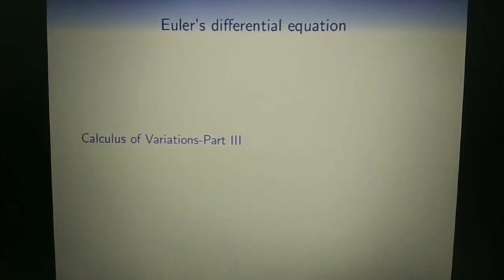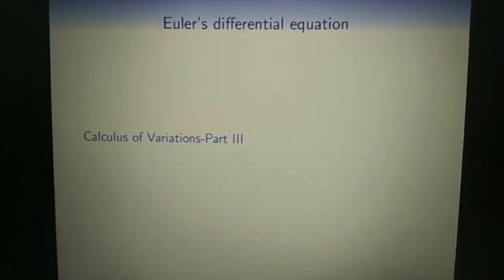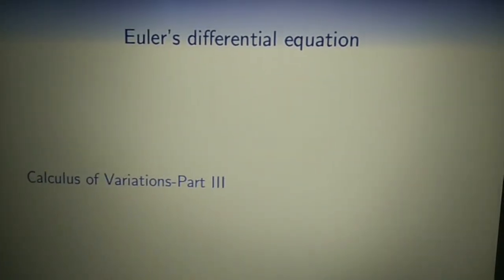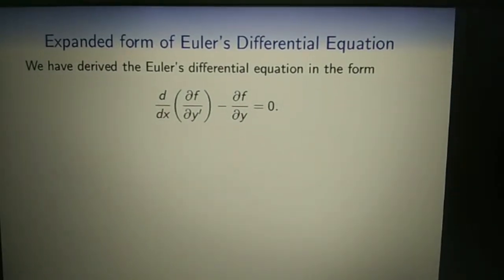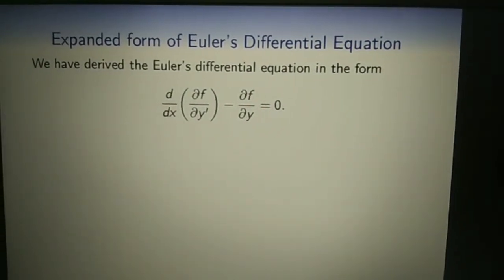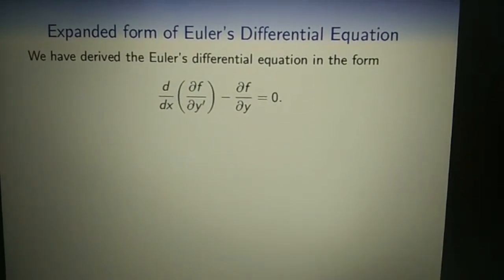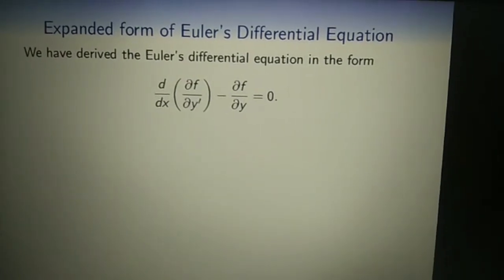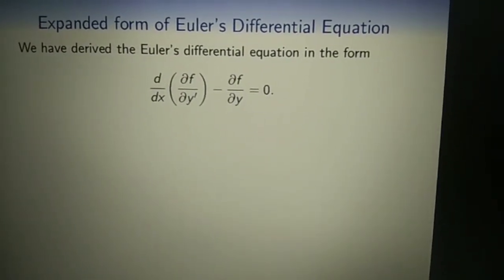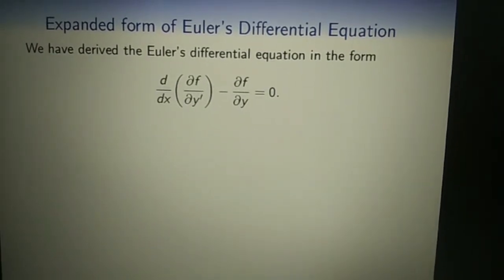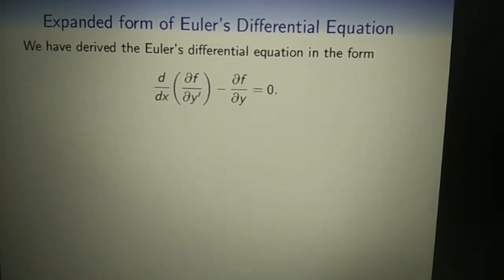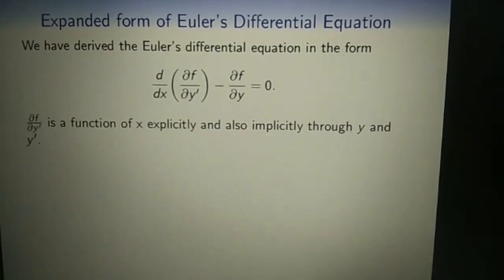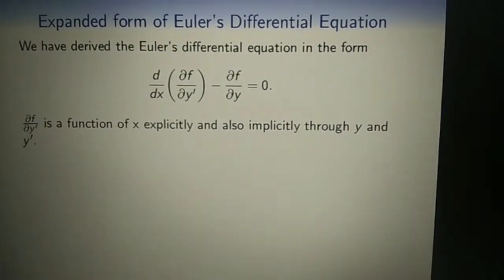Here we consider how to apply Euler's differential equation to the problems discussed earlier. In part 2, we derived Euler's differential equation in the form d/dx of (∂f/∂y') minus ∂f/∂y equals 0. This form is not very useful in practical problems, so we find the expanded form of Euler's differential equation.